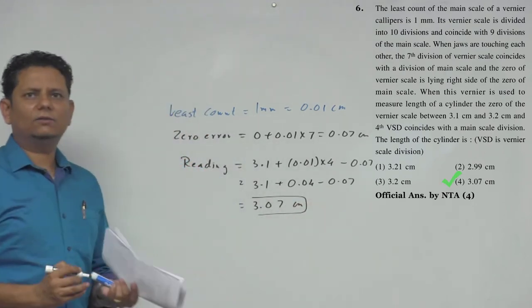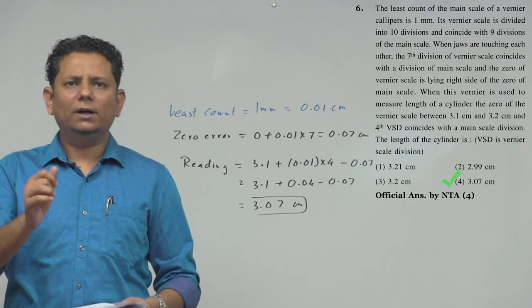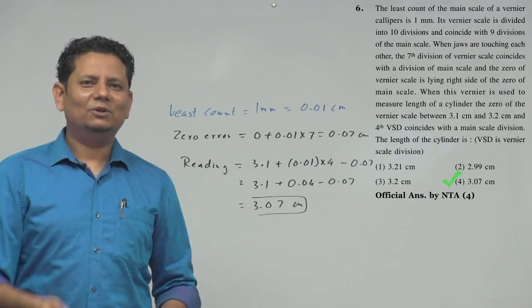This will be our length of the cylinder. Based on this, option number 4, 3.07, would be the right answer.